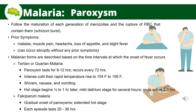The characteristic paroxysm of fever in malaria closely follows the maturation of each generation of merozoites and the rupture of red blood cells that contain them. Prior symptoms of paroxysm include malaise, muscle pain, headache, loss of appetite, and slight fever. Malaria forms are described based on the time intervals at which onset of fever occurs. For tertian or quartan malaria, the entire paroxysm lasts 8 to 12 hours and recurs every 72 hours. The patient experiences intense cold, then rapid temperature rise to 104–106°F, followed by nausea and vomiting.